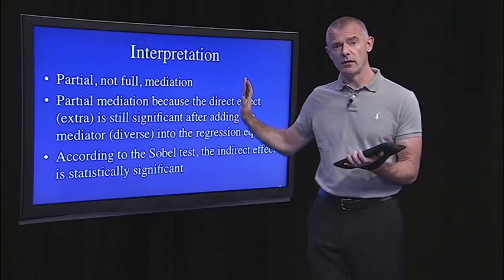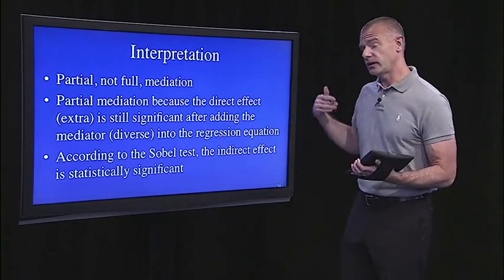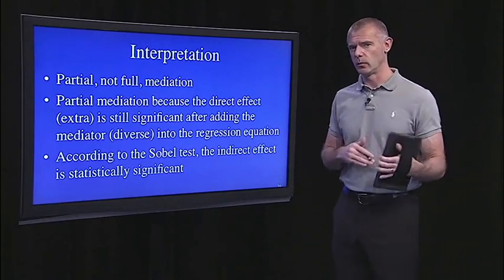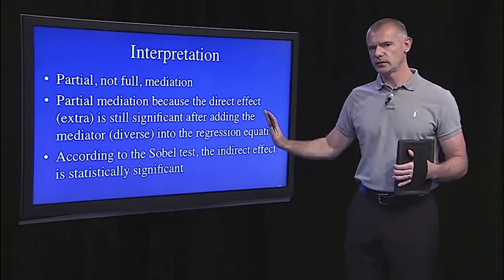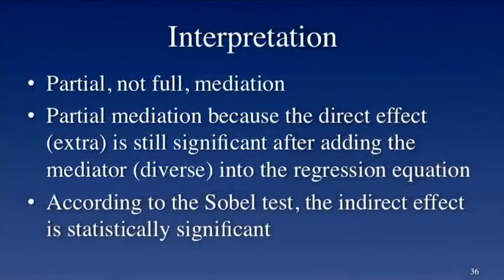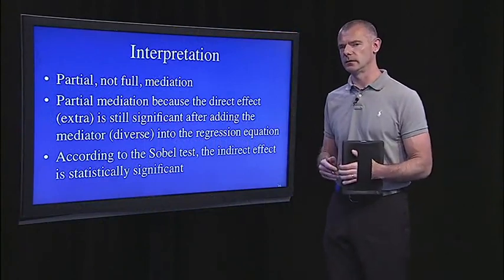So again, the interpretation of this example. We're going to do more examples of this in lecture 12 when we do this in R. We'll do an example where there's actually no mediation. We'll do an example where there's full. But in this first example, what I wanted to show you is this middle ground case where you get partial mediation, not full. The evidence for that is that direct effect did not go completely away. It was still significant after we added the mediator. And further evidence to support that conclusion is that the Sobel test was statistically significant.